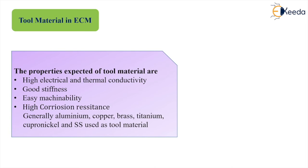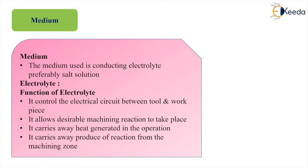The properties expected of the tool material in ECM are: high electrical and thermal conductivity, good stiffness, easily machinable, and high corrosion resistance. Generally, aluminum, copper, brass, titanium, cupro-nickel, and stainless steels are used as tool material in ECM.